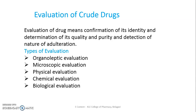What do you mean by adulteration? Adulteration is the debasement of an article. The different types of evaluation methods are: the first one is organoleptic evaluation, second microscopic evaluation, third physical evaluation, fourth chemical evaluation, and fifth biological evaluation.